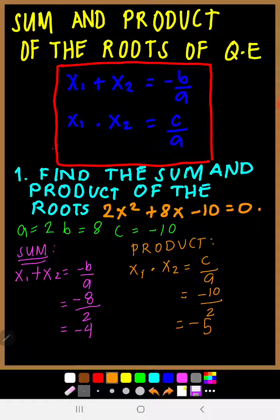Now, why do we find the sum and product? We can also use this method in finding the roots. We don't have a value of x yet — negative 4 is x sub 1 plus x sub 2, and negative 5 is x sub 1 times x sub 2. So we still need to find the roots — the values of x.